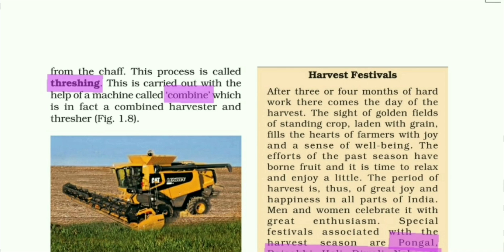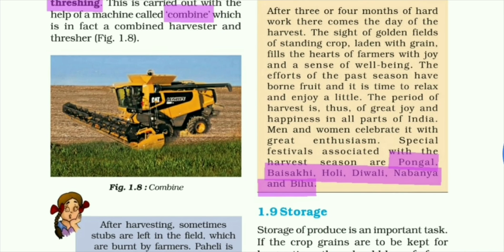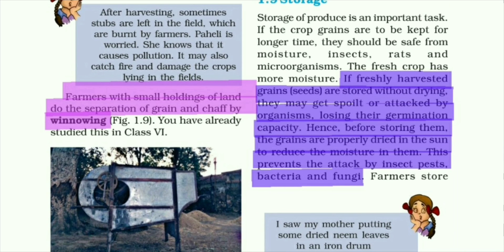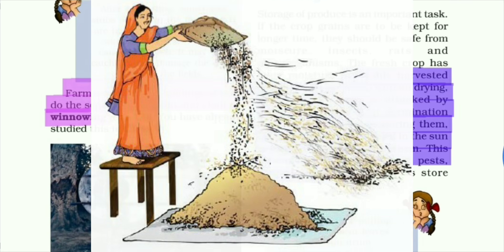You can see a combined machine — it combines the harvester and thresher. Farmers with a small holding of land do the separation of grain and chaff by winnowing. You can see the winnowing machine here, or it can also be done by hand.